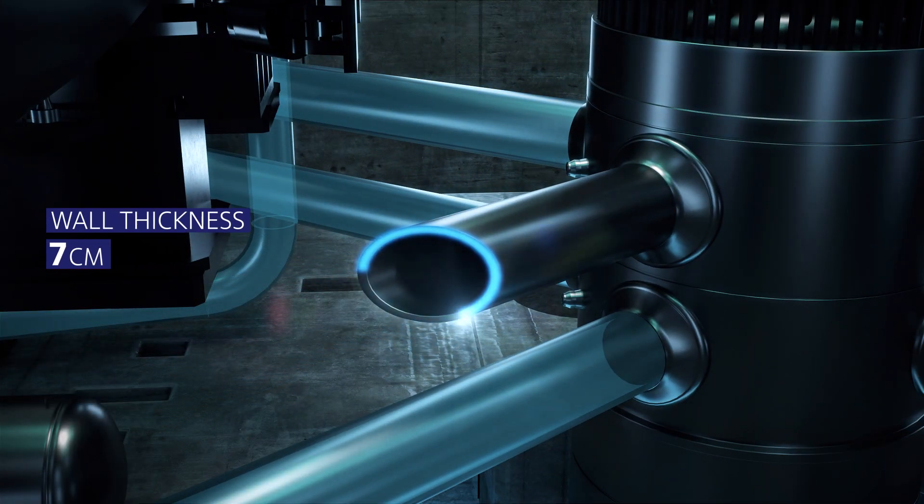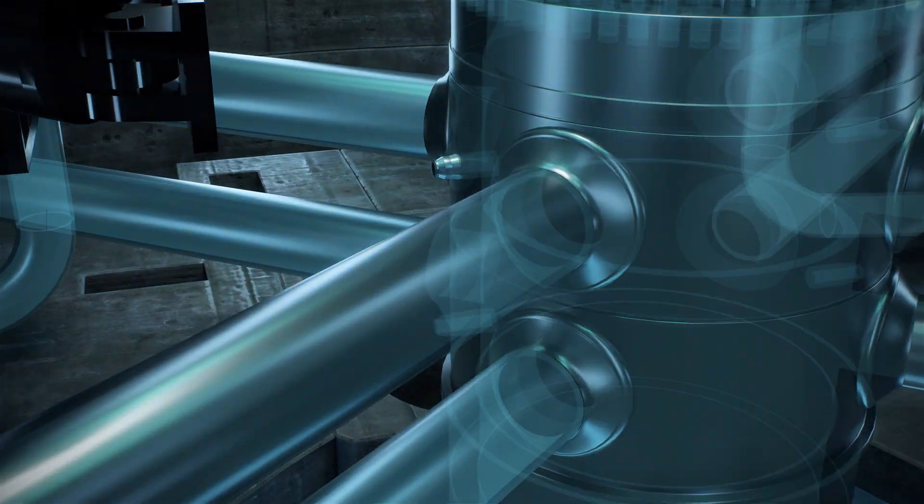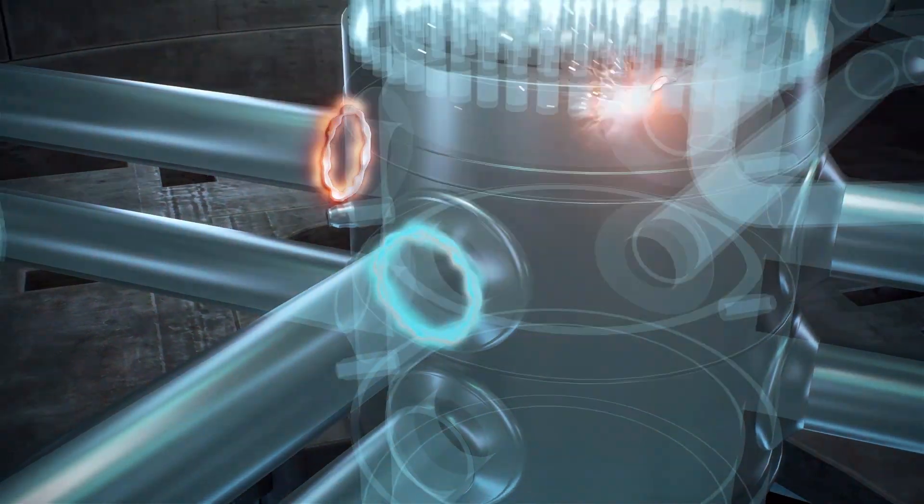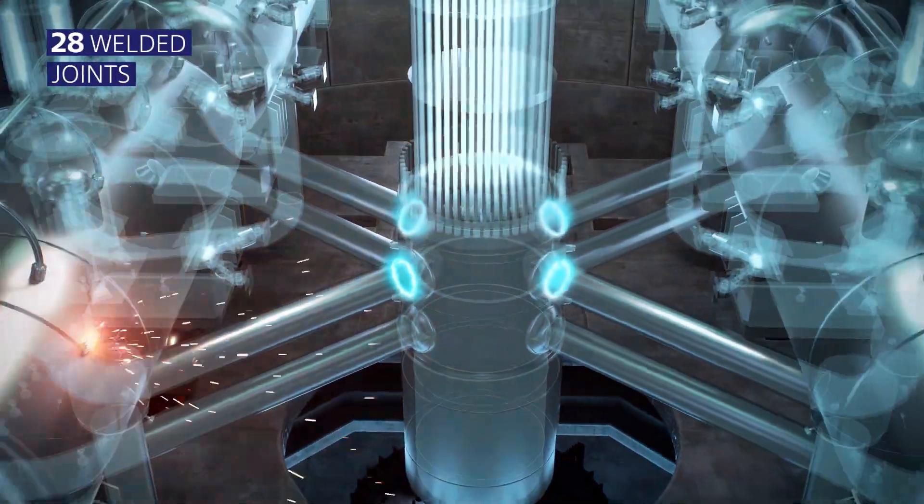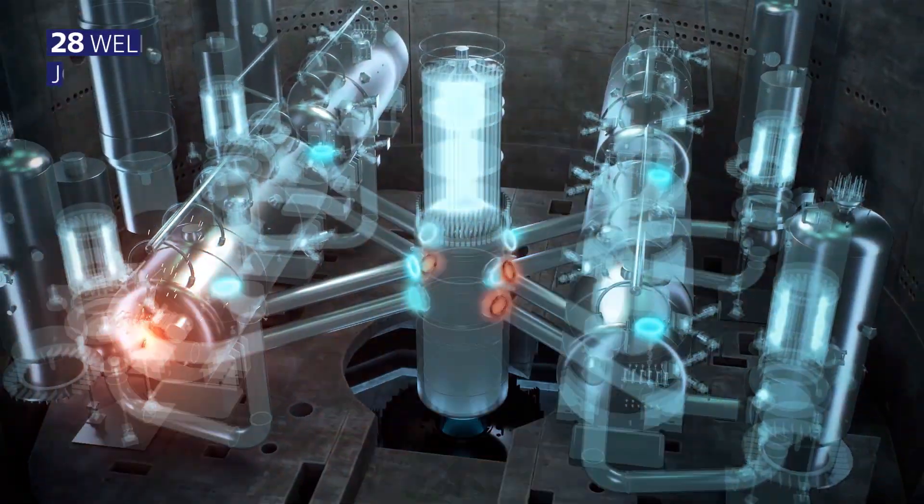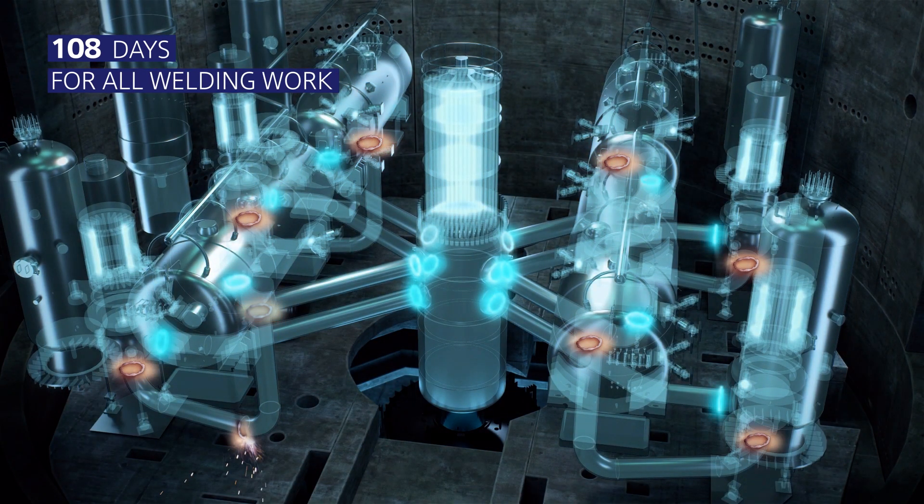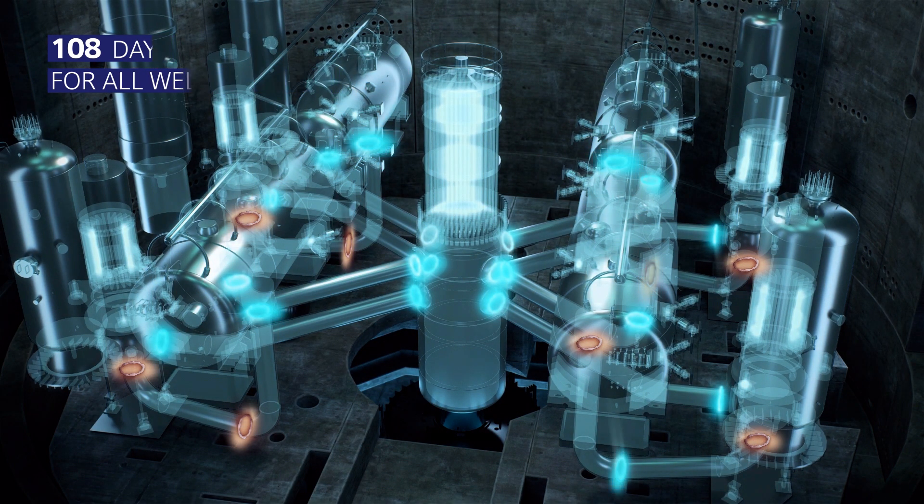The thickness of the pipe walls is 7 centimeters. Welding of the main circulation pipeline is one of the key technological operations during the construction of the power unit. Particular attention is paid to it. The quality of welded joints affects the safety and efficiency of the power unit.